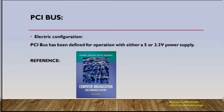Regarding electrical configuration: the PCI bus is defined for operation with either a 5V or 3.3V power supply. The bus clock signal is about 133 MHz and the bus width is 64 bits. One of the advantages of the PCI bus is its very high speed. Thank you for watching my video.